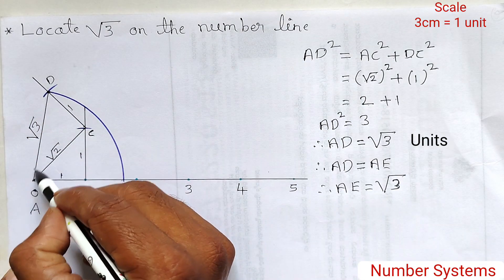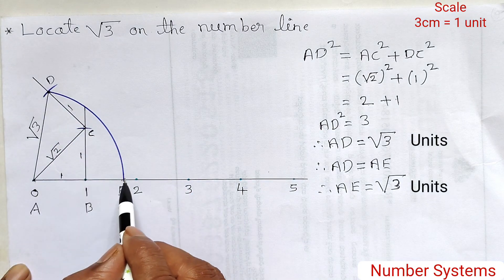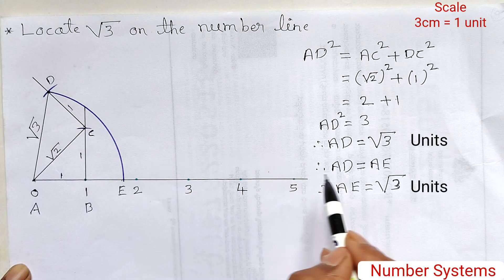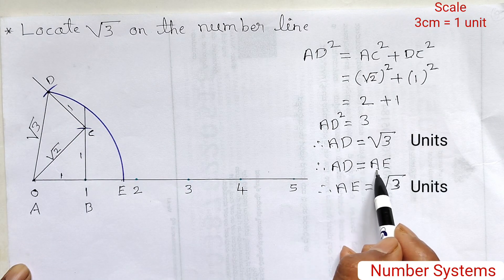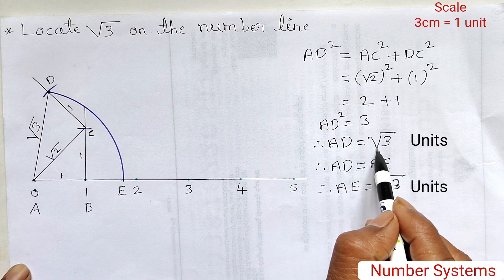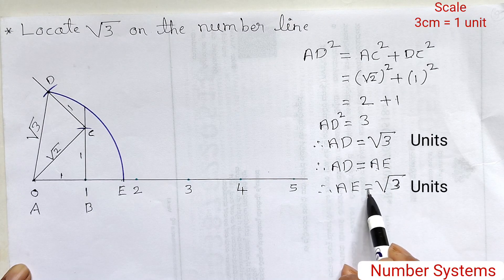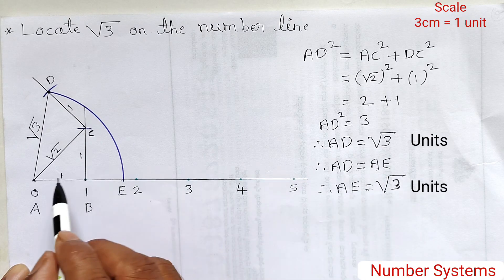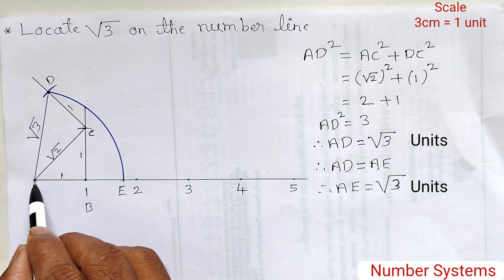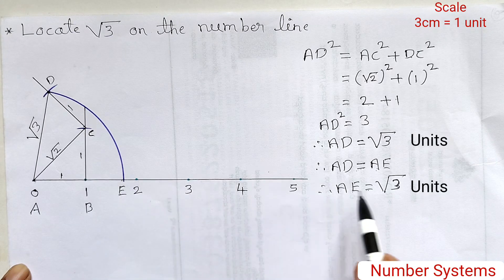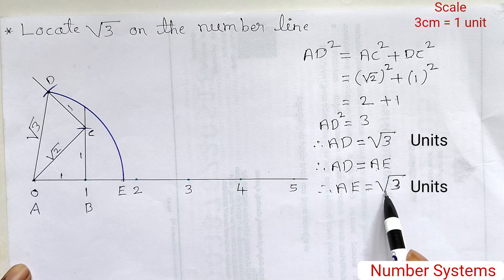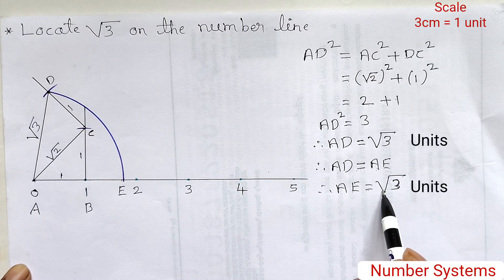Dear students, AD = AE. Therefore, since AD = √3, AE is also equal to √3. From point A to E, the value is √3. We have located the irrational number root 3 on the number line.